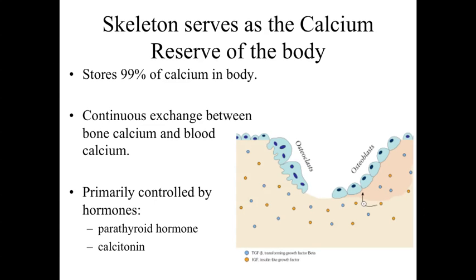We talked about the basic characteristics of bone, and we said that it was like a lot of the other specialized connective tissues within the body, but it's different in that it has these inorganic components. We can see lots of calcium and phosphate being deposited within the bone structure itself, contributing to the overall characteristics of the bone. Focusing primarily on calcium, about 99% of the calcium in the body is going to be stored within the bone structure. So it's this huge reservoir where bone is storing the calcium that's available if we need it.